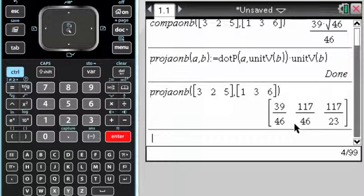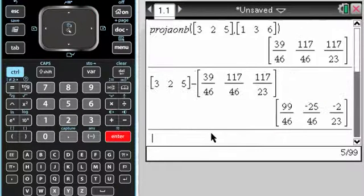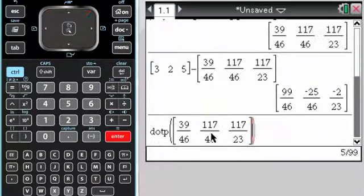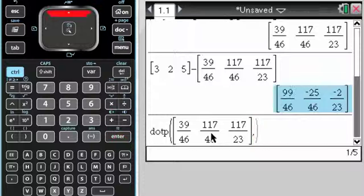Now what I can do is, so that's the projection of A, which is this, onto B. So if I take A and subtract this, what I should now have is two vectors that, if I do their dot product of the projection and this, I get 0 because they're orthogonal to each other.